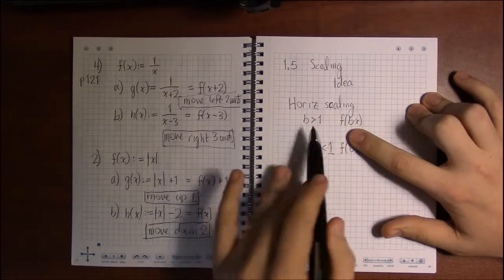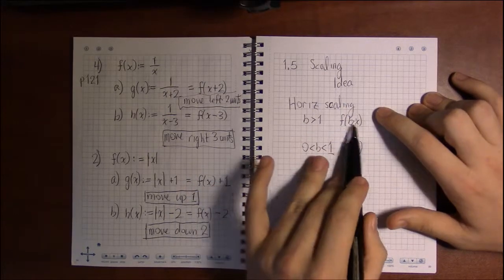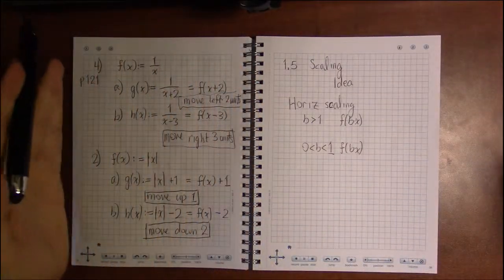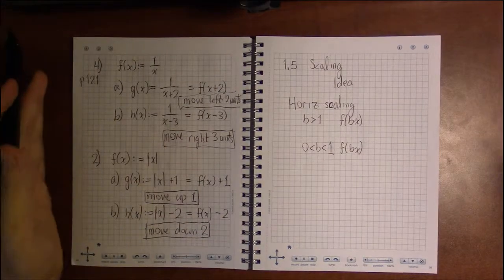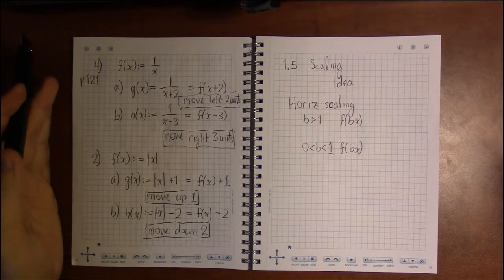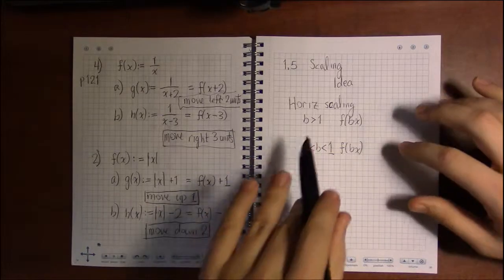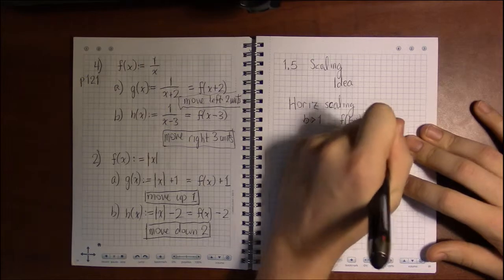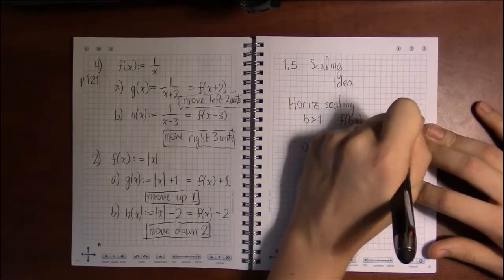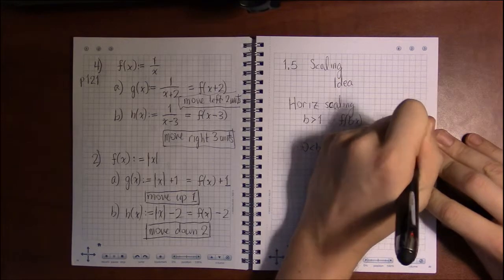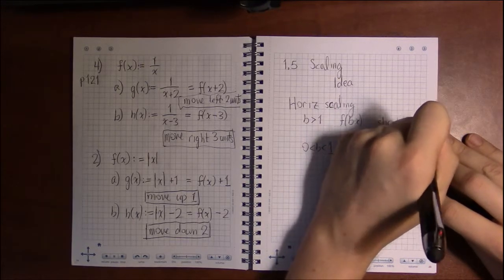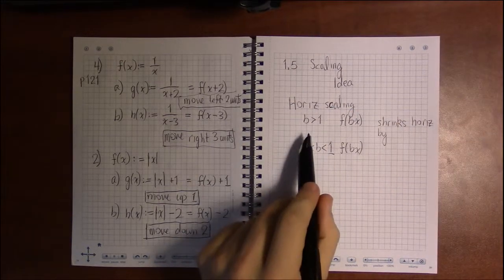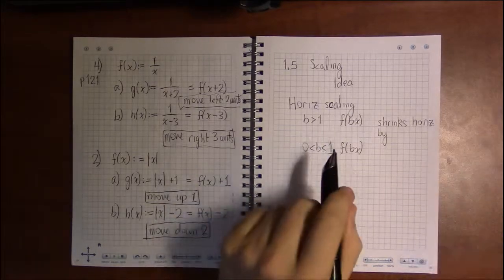So if we have a number here like 2, 2 times x, you would think this would double the width or stretch the graph by 2 units, but in fact it's the opposite because it's horizontal. So this actually shrinks the graph horizontally by a factor of 1 over b.